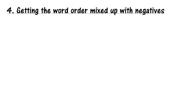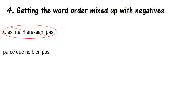Coming in at number four: getting word order mixed up with negatives. Negatives can be confusing because they work slightly differently from English. Today we'll concentrate just on the present tense. Here's an example from a student: 'C'est ne intéressant pas' — trying to say 'it is not interesting.' Another: 'Parce que ne bien pas' — trying to say 'because it isn't good.' They're incorrect; the student is communicating something but the accuracy isn't there.